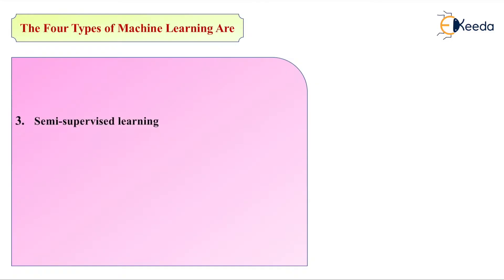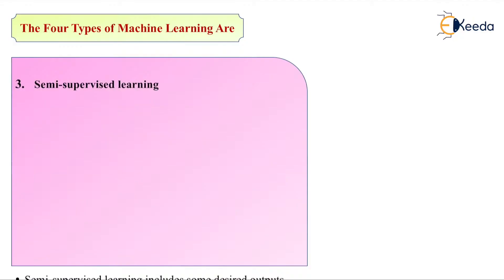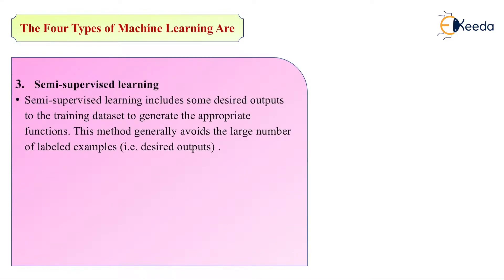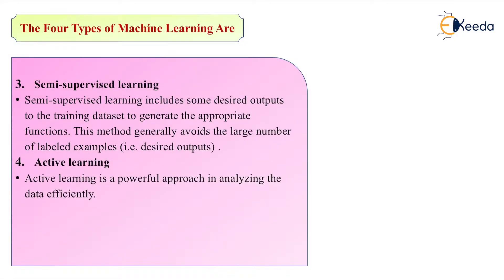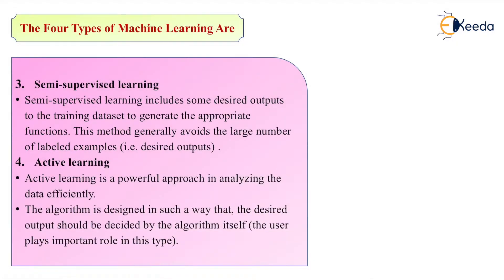Next is semi-supervised learning. In this it includes some desired outputs of the training data set to generate the appropriate function. This method generally avoids the large number of labels, or desired outputs. Fourth is active learning, which is a very powerful approach in analyzing data efficiency. The algorithm is designed such that the desired output should be decided by the algorithm itself. The user plays a very important role in this learning.